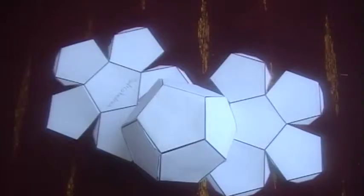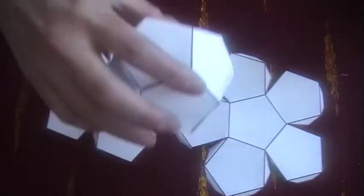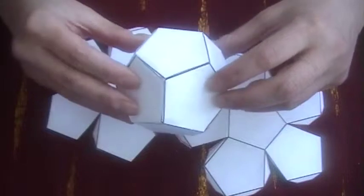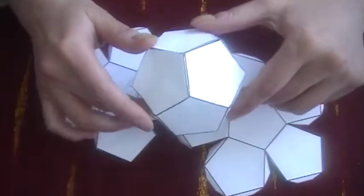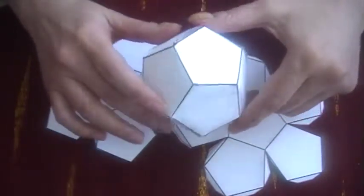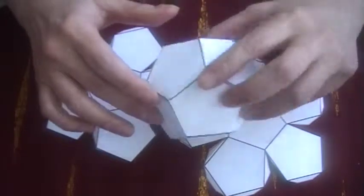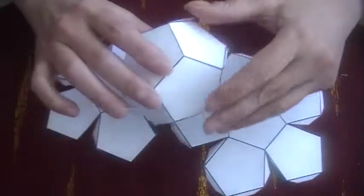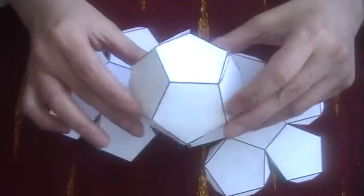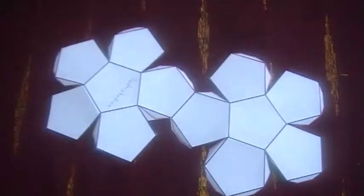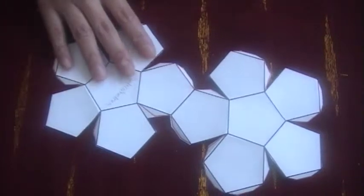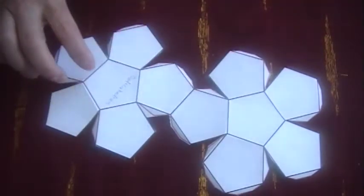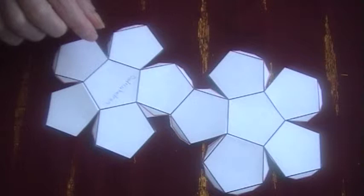We have here the dodecahedron made up of 12 pentagons. You can see this shape that is formed with the 12 pentagons. It looks almost like a European soccer ball, but it is not. It's not totally round. It's made up of 12 pentagons. The net of the dodecahedron is here. We have two sets of six pentagons.